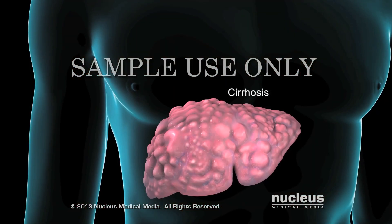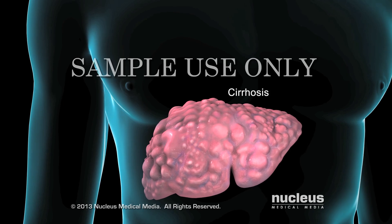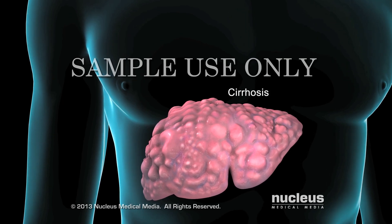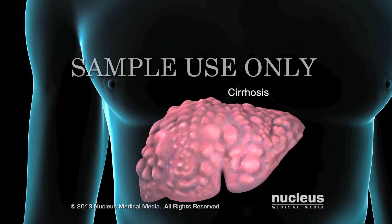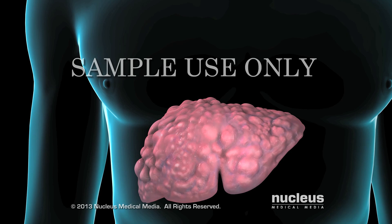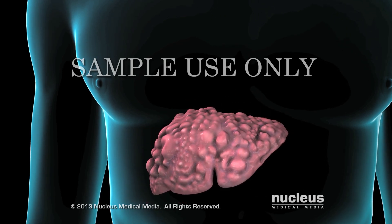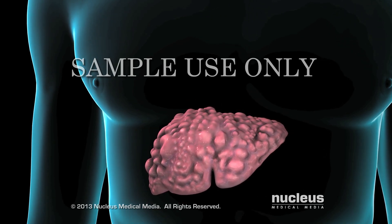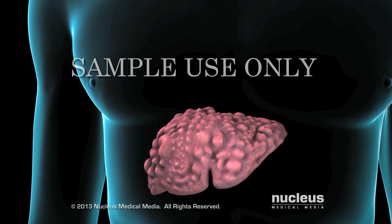If you have a chronic hepatitis C infection, your liver contains a large amount of scar tissue called cirrhosis, which limits blood flow and results in permanent shrinking and hardening of your liver.